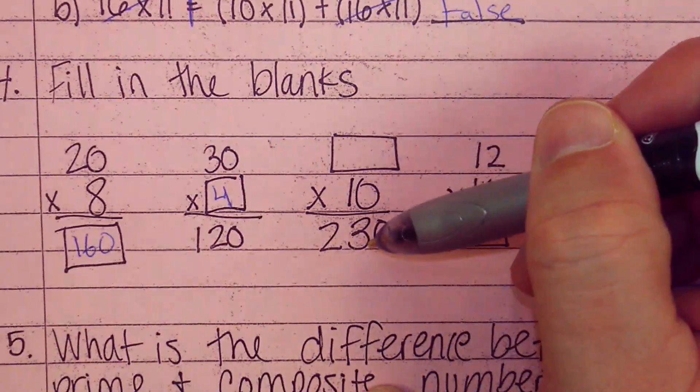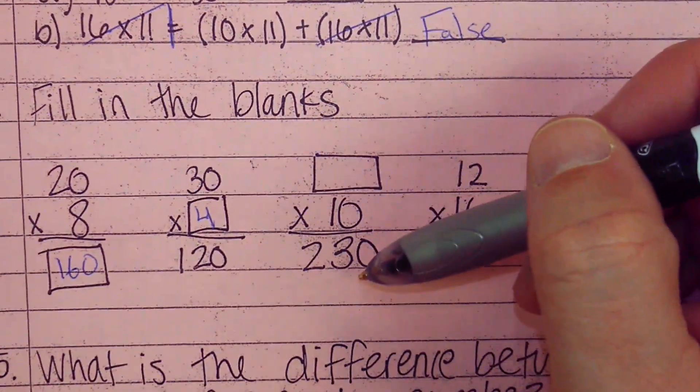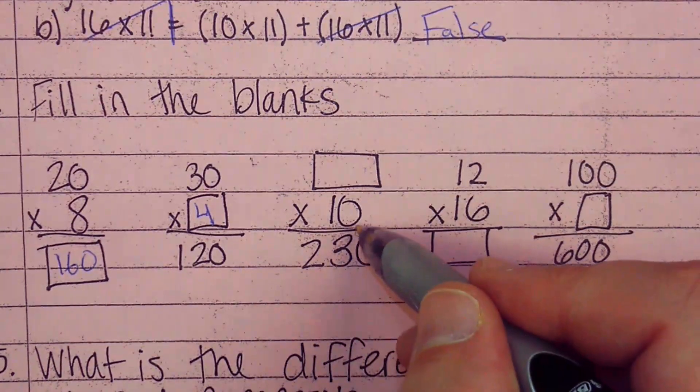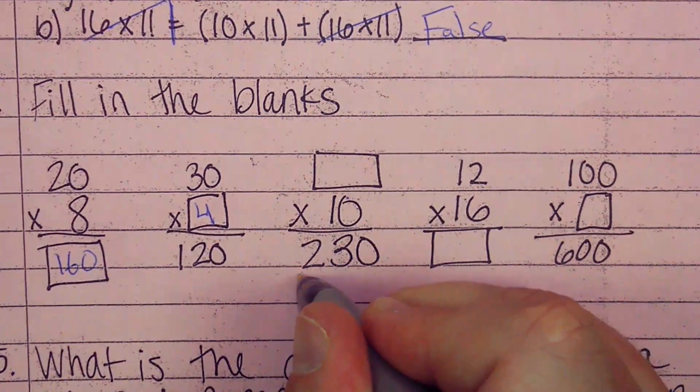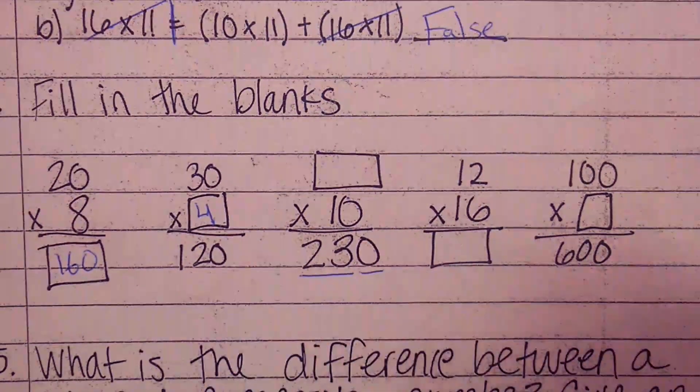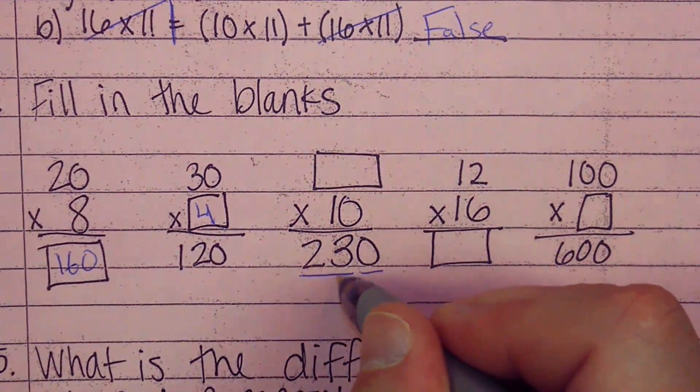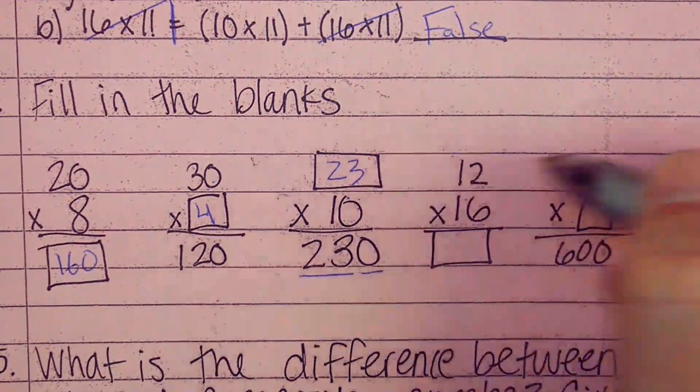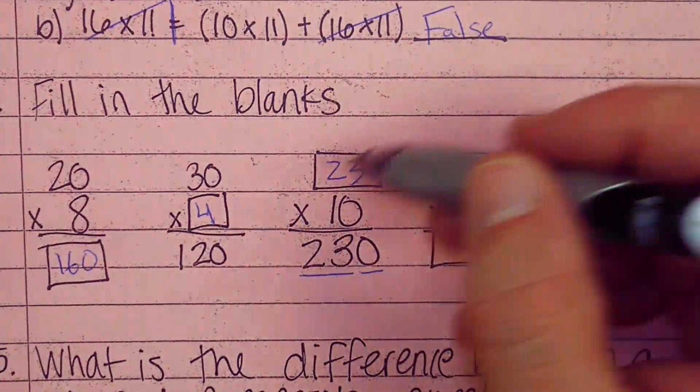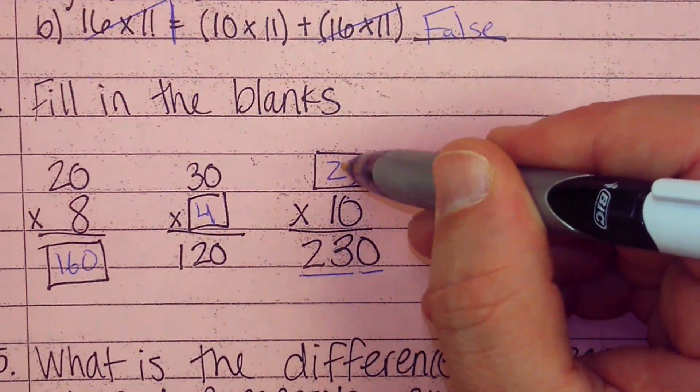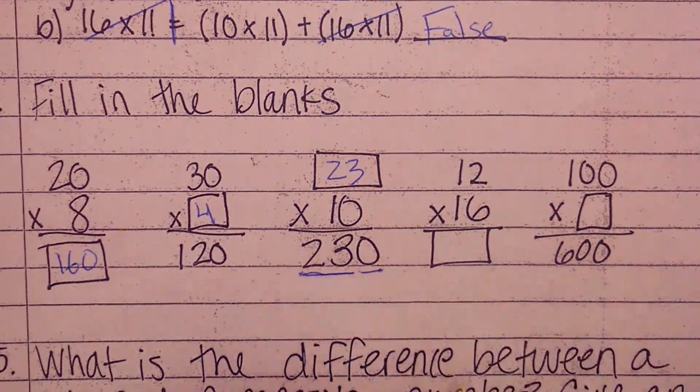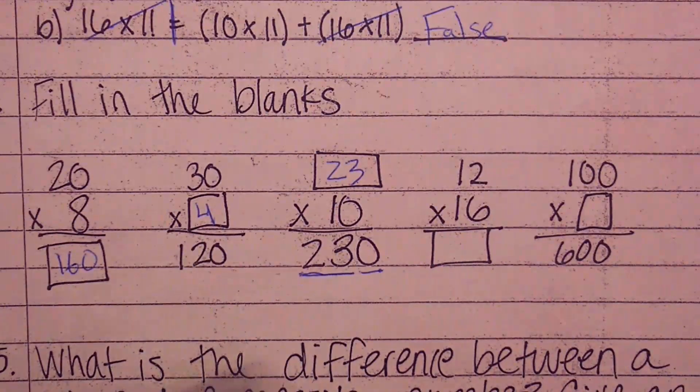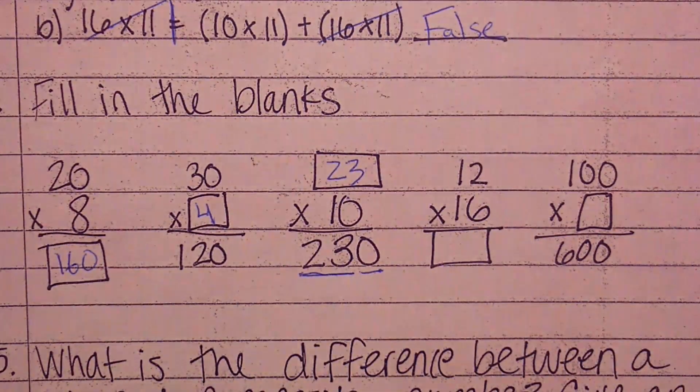Something times 10 is 230. According to our zeros rule, if I take any number times 10, the answer is that number with a 0 placed on the end. So my answer must be 23, because the rule says if you take any number times 10, 23 times 10 is 23 with a 0 on the end.